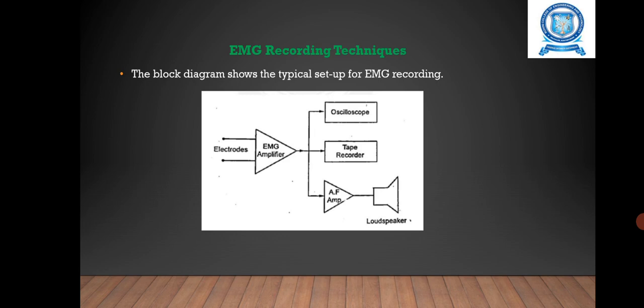The oscilloscope is used to display EMG waveform. The tape recorder is used to facilitate playback and also to study EMG and sound waveforms at a later convenient time. The amplitude of EMG signals depends upon type and placement of electrodes used and the degree of muscular extension.